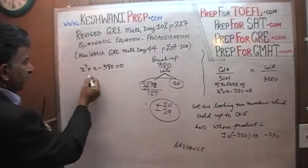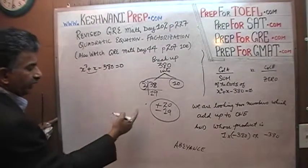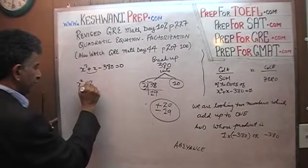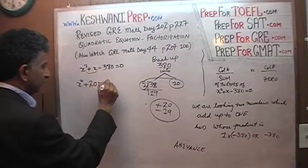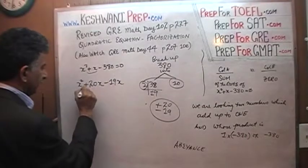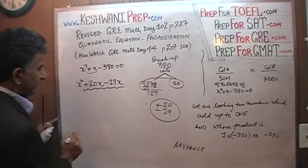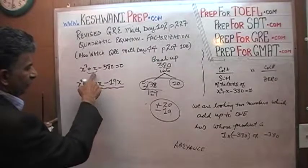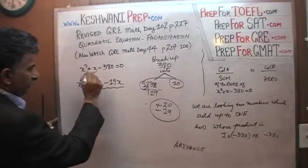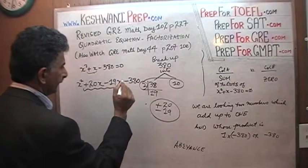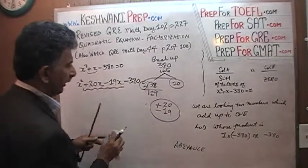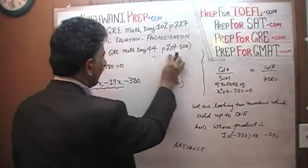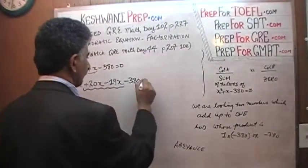So this middle term, a positive x, we are going to break it up into positive 20x and negative 19x. So the equation becomes x squared plus 20x minus 19x minus 380 equals 0. A positive 20x and a negative 19x add up to positive x, which is our original middle term.